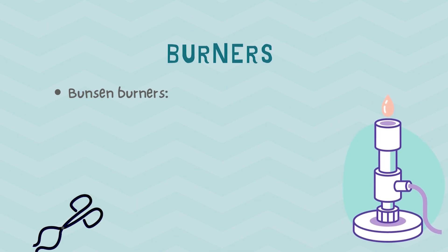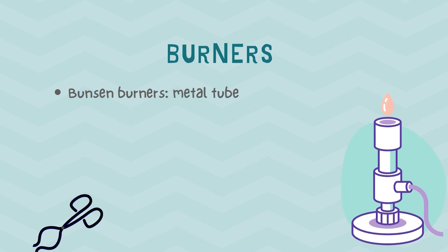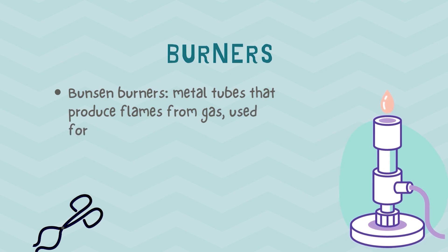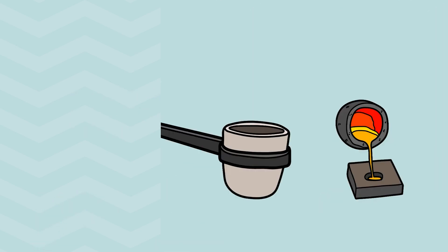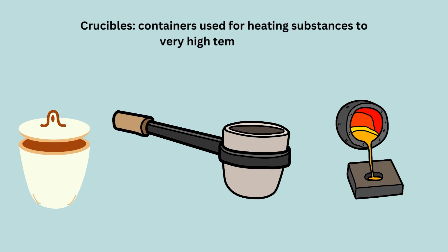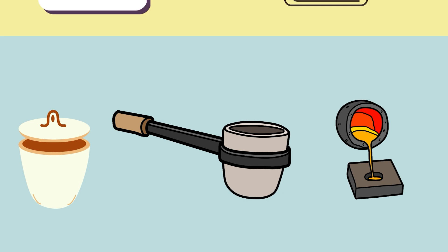The Bunsen burner is a metal tube that produces a flame from gas. It is used in the lab for heating. Crucible. Crucibles are containers used for heating substances to very high temperatures.